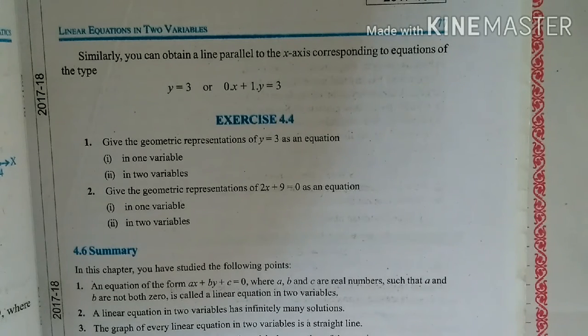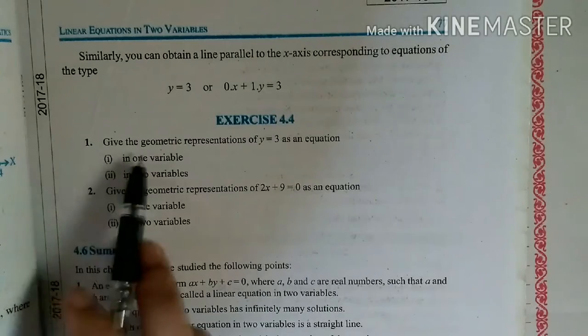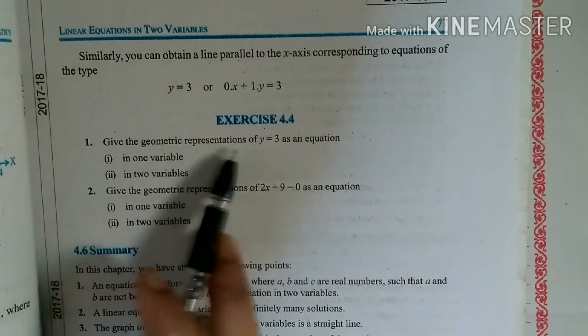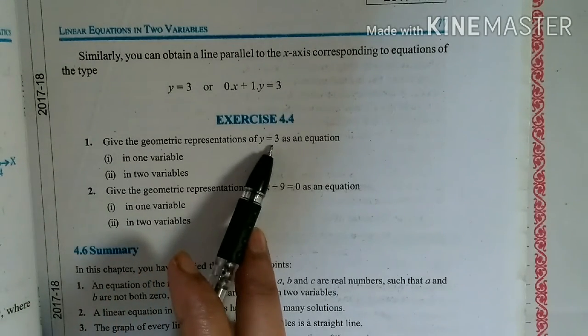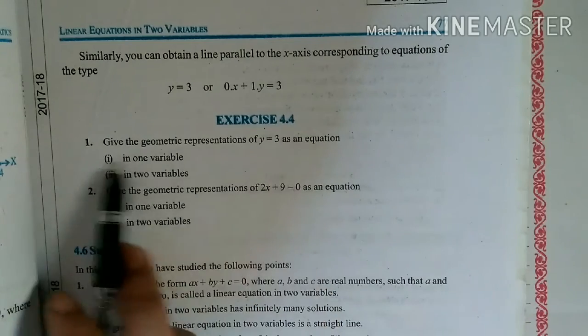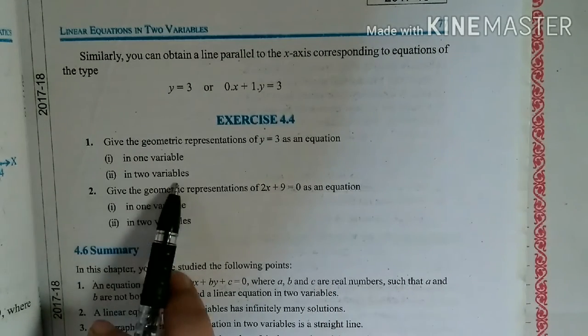It means when we draw graph, our line will be parallel to y-axis or x-axis. So see question number one. Give the geometric representation of y=3 as an equation in one variable and in two variables.